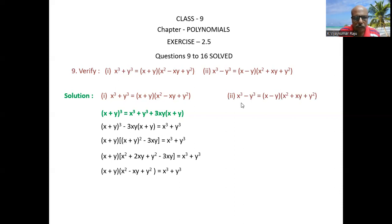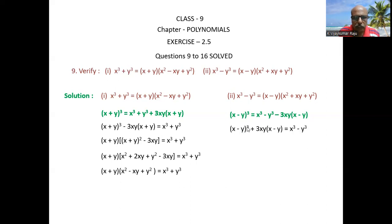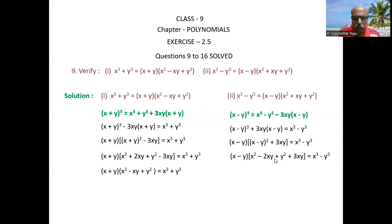For the second part, proving x³ - y³ = (x-y)(x² + xy + y²), we use (x-y)³ = x³ - y³ - 3xy(x-y). Rearranging: x³ - y³ = (x-y)³ + 3xy(x-y). Taking (x-y) common: = (x-y)[(x-y)² + 3xy]. Expanding (a-b)²: = (x-y)[x² - 2xy + y² + 3xy] = (x-y)(x² + xy + y²).